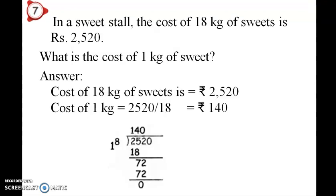The cost of 18 kg of sweets is rupees 2525. So 1 kg is approximately 42 rupees. If the cost of sweet is given, 1 kg has a division. So that gives the price for all children.